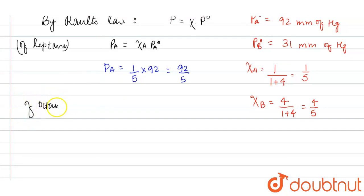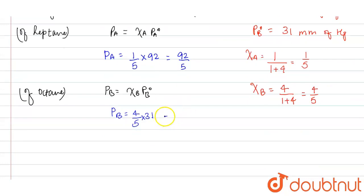For octane, PB is equals to XB into PB naught. So PB is equals to XB is four by five, and PB naught given is 31. So 31 into 4, that will be equals to 124, that will be equals to 124 divided by 5, mm of Hg.